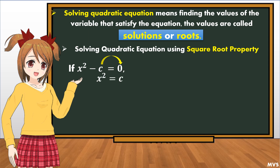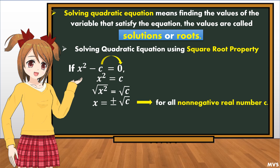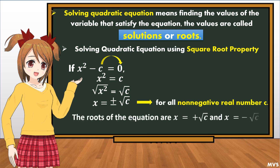Then, get the square root of both sides. We will have the square root of x squared equals the square root of c. The square root of x squared is x. The square root of c is plus or minus the square root of c. This is for all non-negative real number c. The roots of the equation are positive square root of c and negative square root of c.